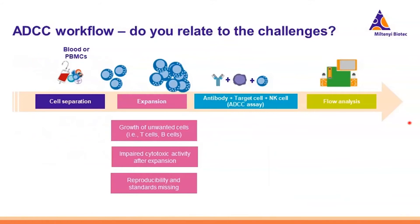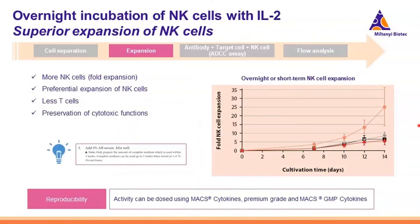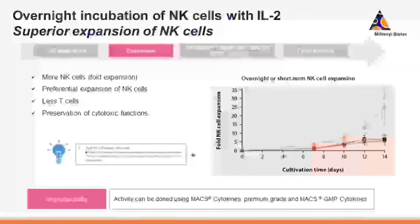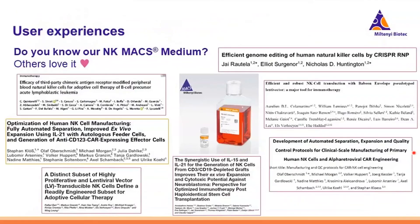The next challenge after isolating NK cells is expansion. Specifically for this assay, usually you would not need to expand the cells — just an overnight incubation with interleukin-2 is sufficient. However, our NK MACS medium allows you to either expand your cells for two to three weeks or do an overnight incubation. The major advantages are that you get more NK cells as they preferentially expand, you get fewer T cells, and the cytotoxic function of the NK cells is preserved. AB serum needs to be added for optimal results. If you are not familiar with our NK MACS medium, be sure to check out the relevant publications, including those with NK cells and CAR NK cell expansion.